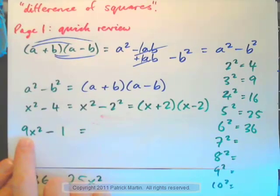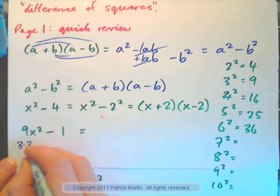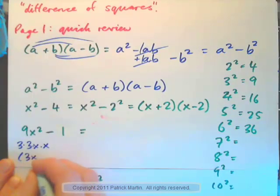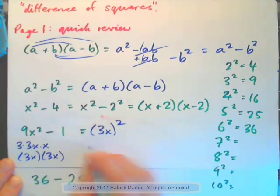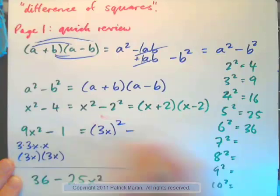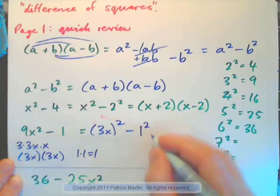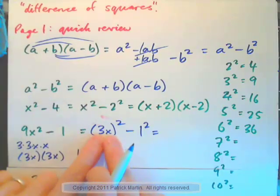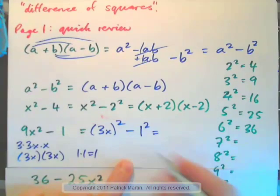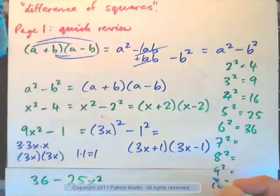Now let us remember how to do 9X squared minus 1. 9X squared is 3X times 3X, or 3X all squared. And 1 is 1 squared. So 3X all squared minus 1 all squared is just like A squared minus B squared, where our A is 3X and our B is 1. So we can write this as 3X plus 1 times 3X minus 1.